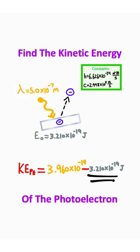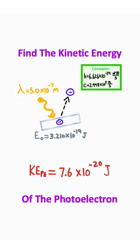Now what I need to do is subtract off the work function. That's going to give me 7.6 times 10 to the negative 20 joules. So that right there is the kinetic energy of the photoelectron that was formed from this light photon shined on the metallic surface.